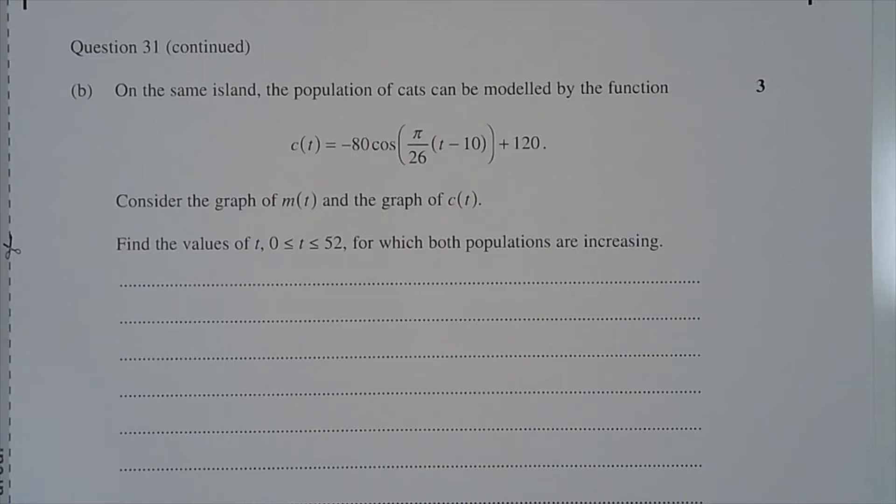Part b. On the same island, the population of cats can be modeled by the function c(t) equals -80 cos(pi over 26)(t - 10) + 120. Consider the graph of m(t) and the graph of c(t). Find the values of t, where 0 ≤ t ≤ 52, for which both populations are increasing.